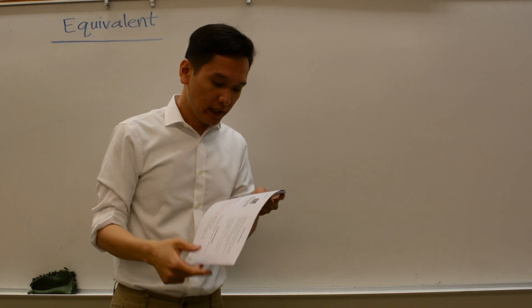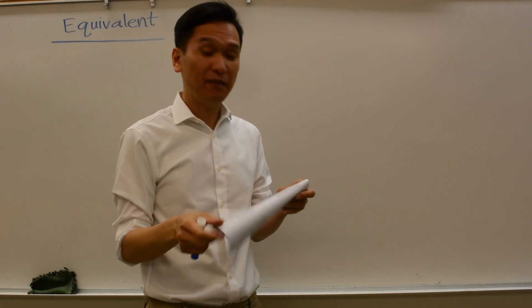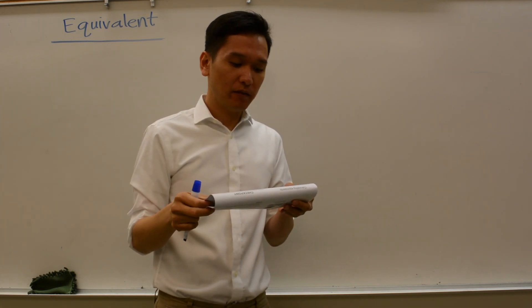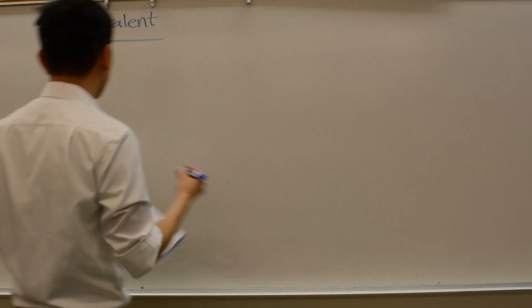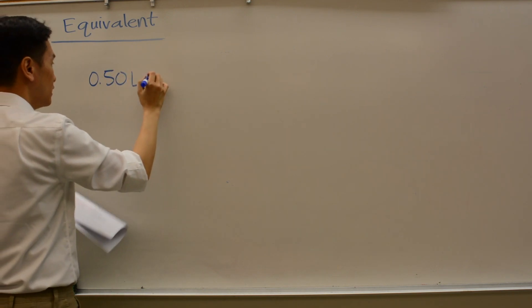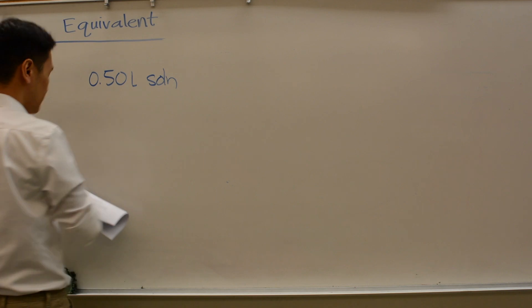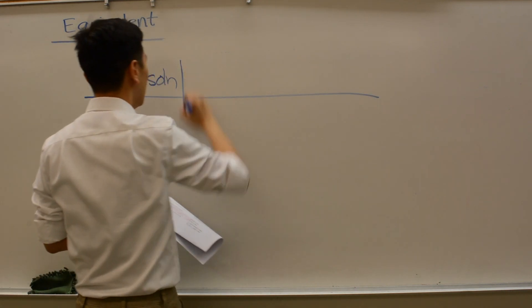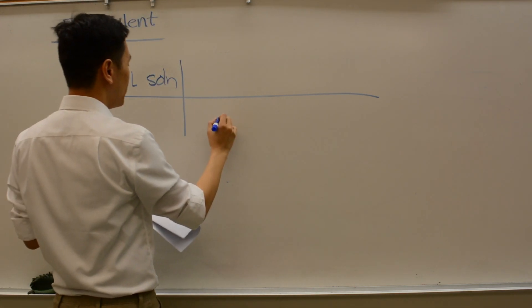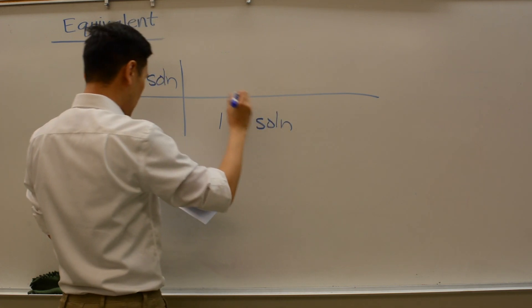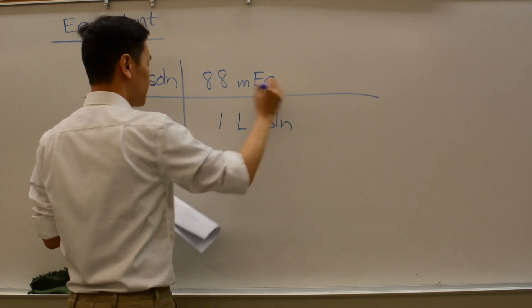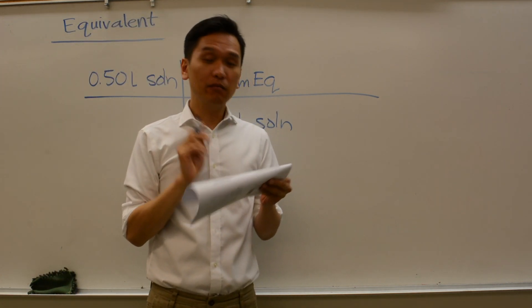The question states: the laboratory tests for a patient include a blood calcium level of 8.8 milliequivalents per liter. How many moles of calcium ion are in 0.5 liters of blood? So that's my starting point. I know that we have 0.5 liters of solution of blood. And the 8.8 milliequivalents per liter, that's a conversion factor. So I say that for every one liter of solution of blood, I have 8.8 milliequivalents.